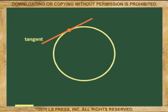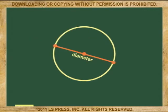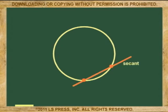Now, let's review the names: Radius, Diameter, Chord, Secant, and Tangent.